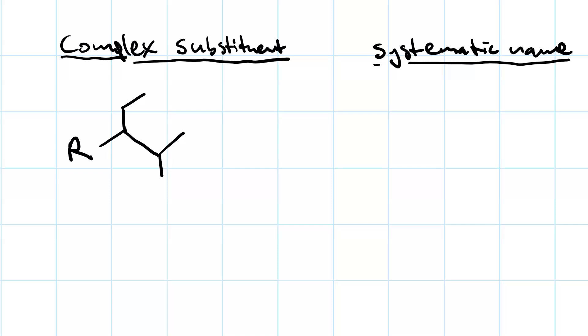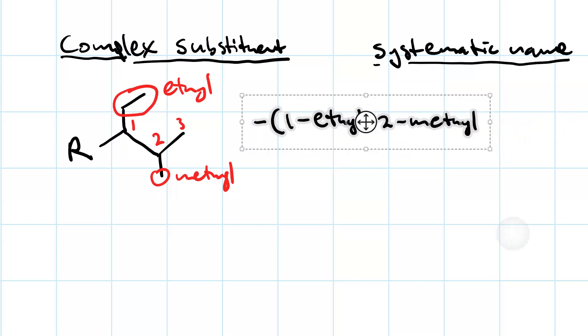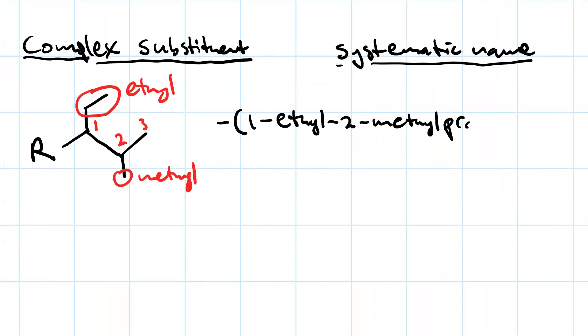Sometimes you have a complex substituent that is sufficiently uncommon that there is no common name. In that case, we rely on the systematic name. Again, carbon number one is the one bonded to the parent chain. And then number like so. And the systematic name becomes, let's see, we've got an ethyl group on carbon number one and a methyl group on carbon number two. So the systematic name of this complex substituent is 1-ethyl-2-methylpropyl.